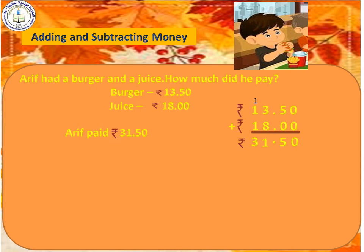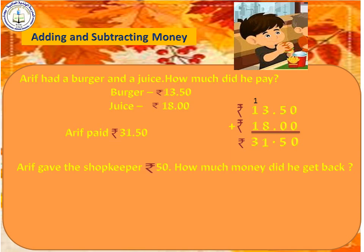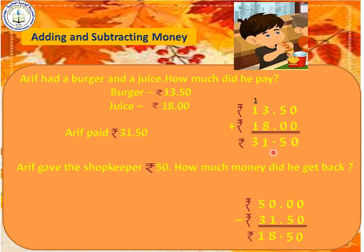Children, if you don't have change, what will you do? You will give a big amount of money. Then will the shopkeeper take that full amount? No — he will give back change. Here also, Arif did not have change. So he gave 50 rupees. How much money did he get back? For that we have to subtract. 50 rupees minus 31 rupees 50 Paise. We take 31 rupees because that is what Arif had to pay. So the shopkeeper will give back the balance amount.